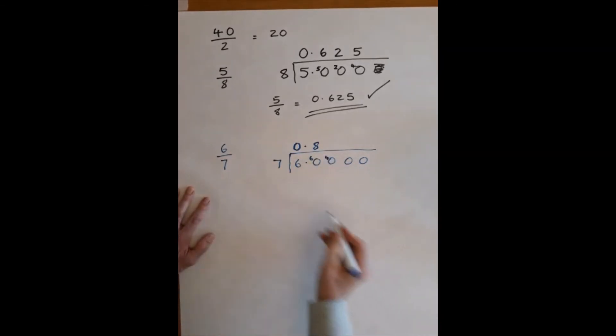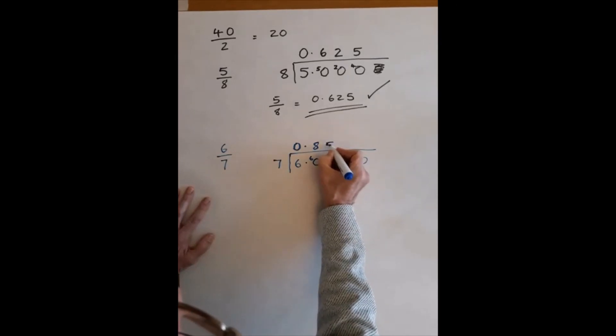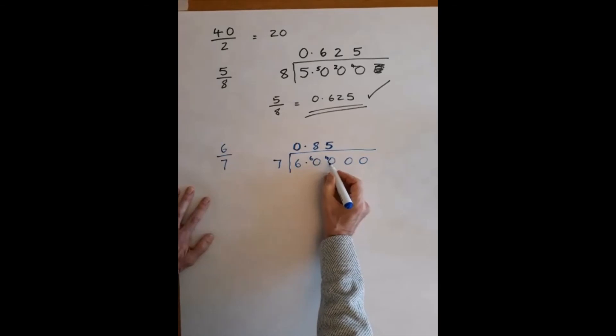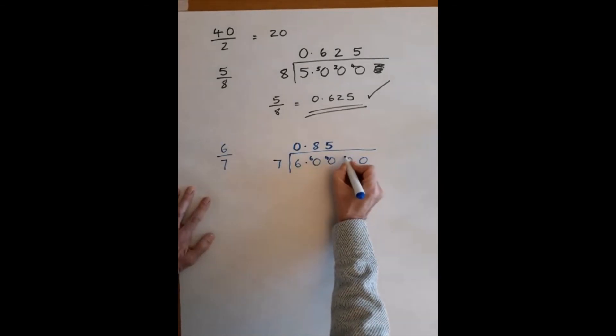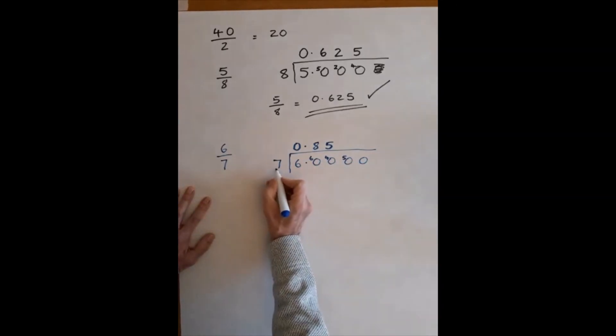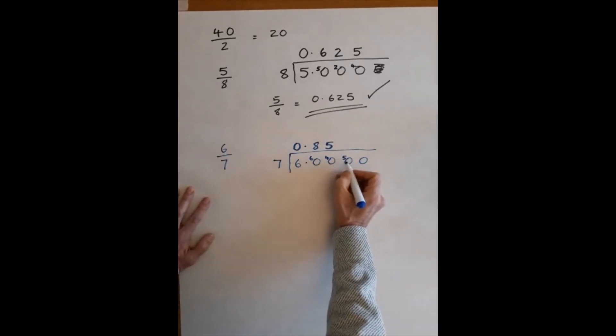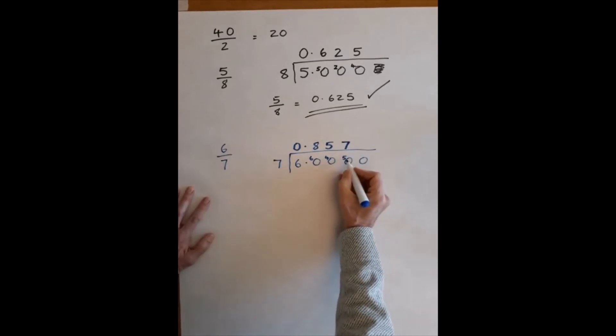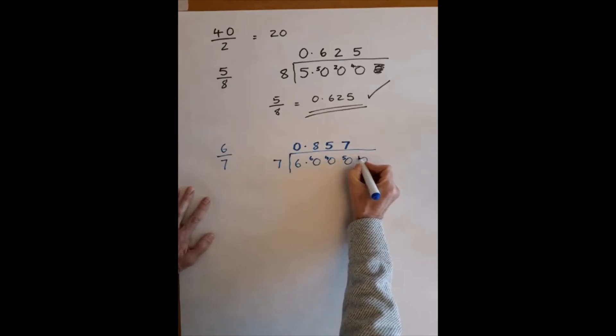Okay, so how many times does 7 go into 40? 5 times 7 are 35, so 5 goes there. 5 times 7 are 35. 35 and 40, the difference is 5. How many times does 7 go into 50? 7 times 7 make 49, so it's 7 of them, and it makes 49, and the remainder is 1.